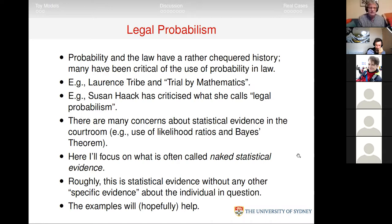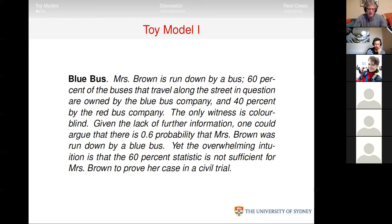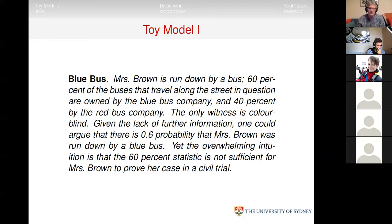The first case is usually called the Blue Bus. Mrs. Brown is run down by a bus. 60% of the buses that travel along the street are owned by the Blue Bus Company, and 40% by the Red Bus Company. The only witness is colorblind. Given the lack of further information, there's a probability of 0.6 that Mrs. Brown was run down by a blue bus. Yet the overwhelming intuition is that the 60% statistic is not sufficient for Mrs. Brown to prove her case in a civil trial, even though preponderance of evidence only requires greater than 0.5.